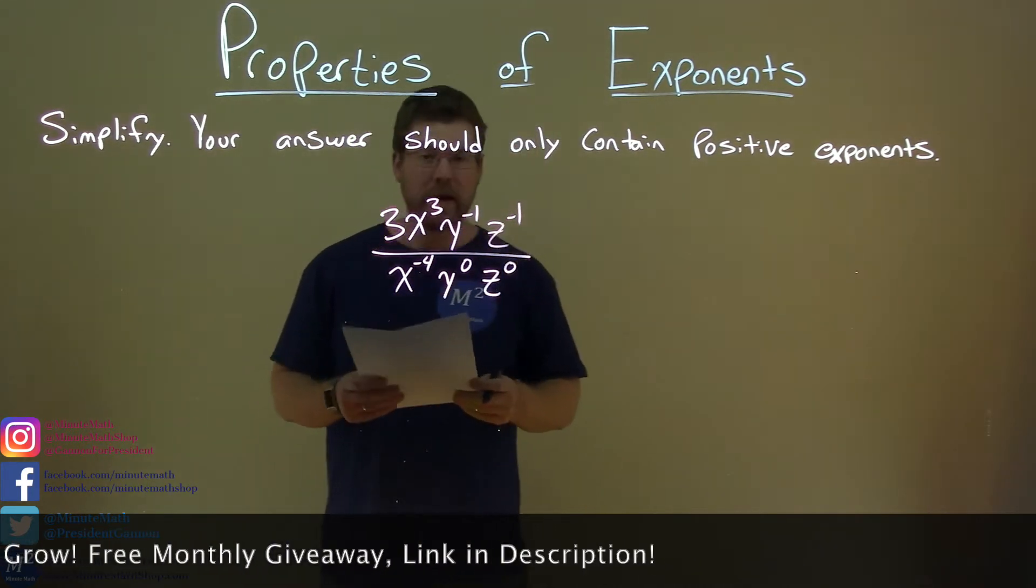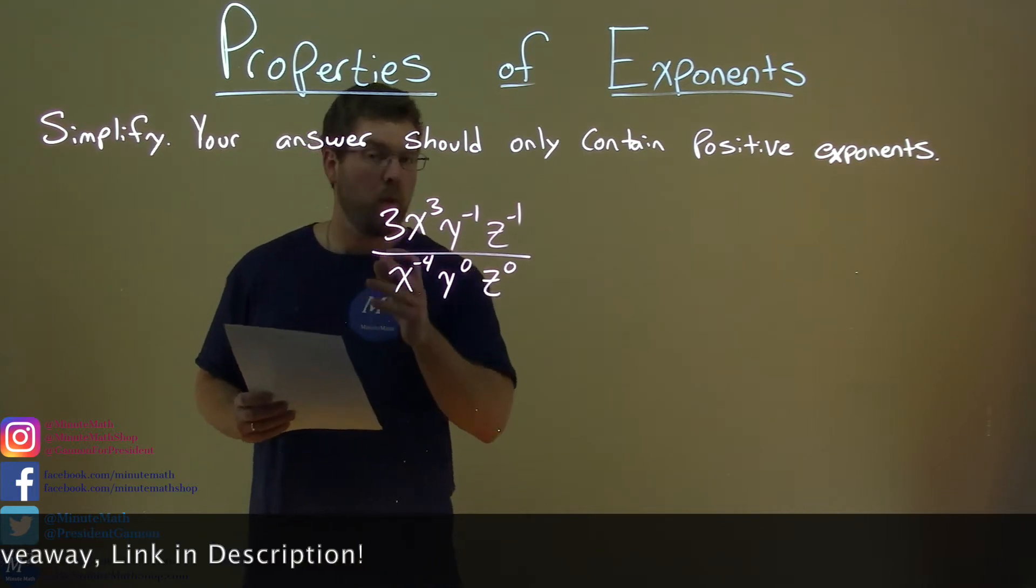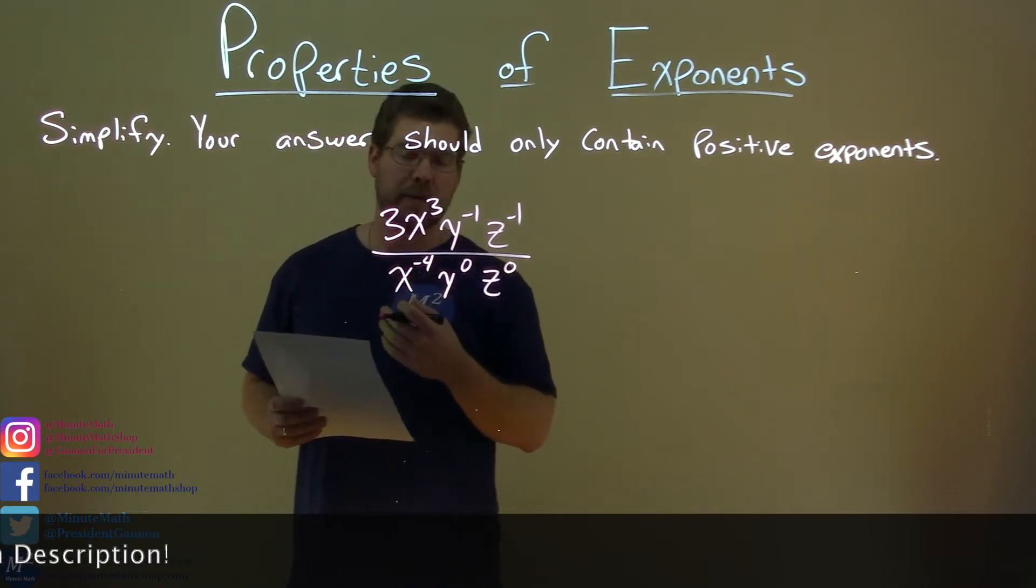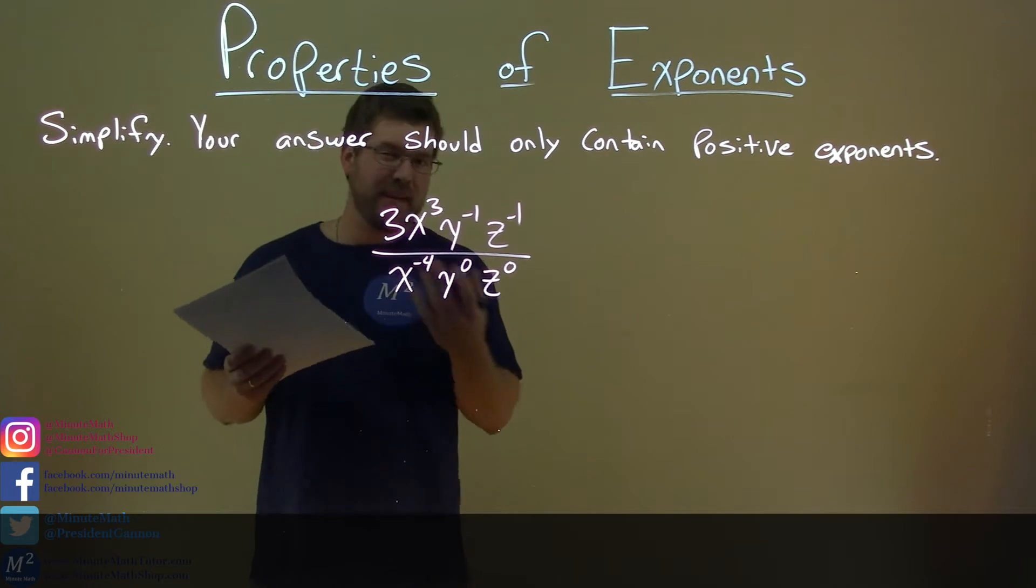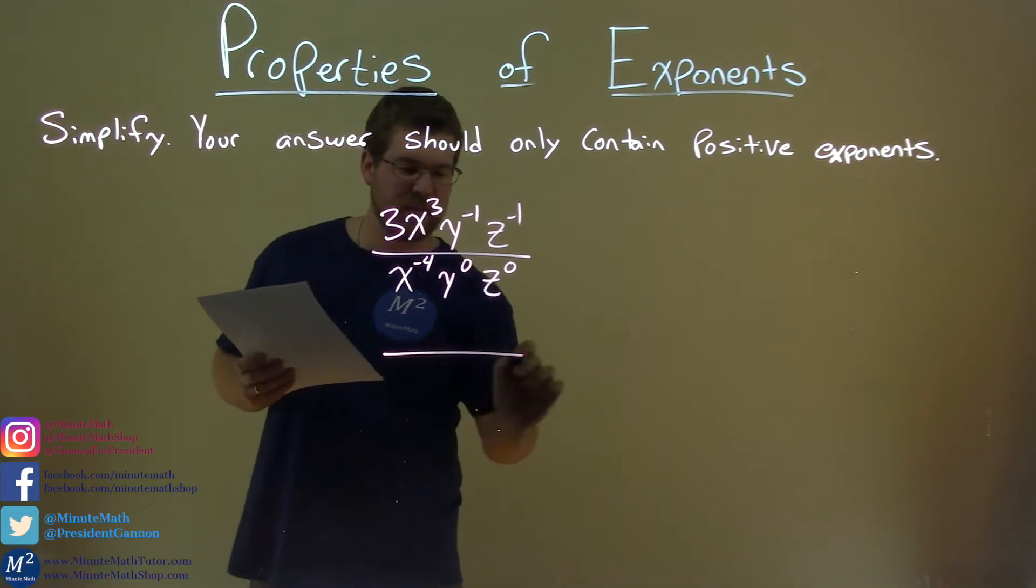I always first look at my coefficients. We have a 3 here and a 1 in front of that x to the negative 4th power. The 3 can't have anything done to it, so we just leave it as a 3.